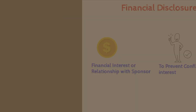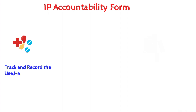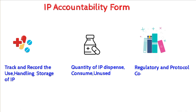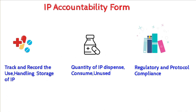The Accountability Form is a document used in clinical trials to track and record the use, handling and storage of the IP. It typically includes information such as the quantity of IP given to subjects, quantity consumed by subjects, quantity unused and quantity remaining at the site. The purpose is to ensure that the IP is handled, stored and used appropriately in accordance with the study protocol and applicable regulations. It helps reduce the risk of material loss or contamination and demonstrates compliance with regulatory requirements and GCP.